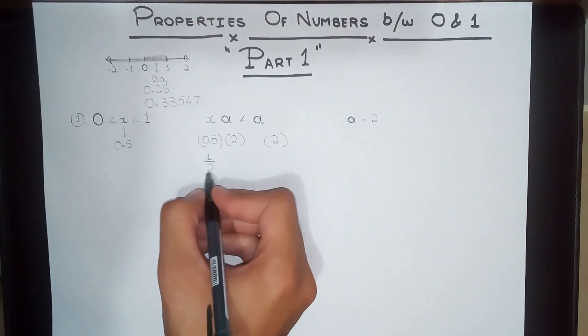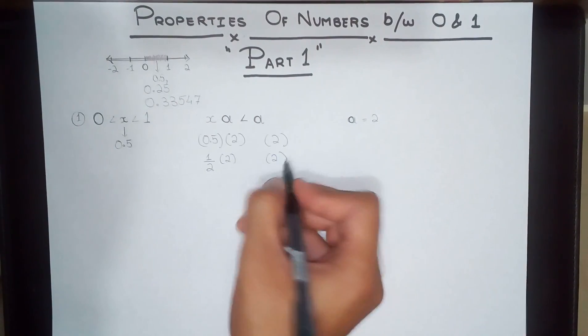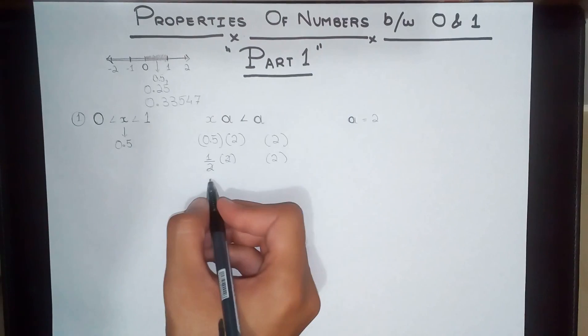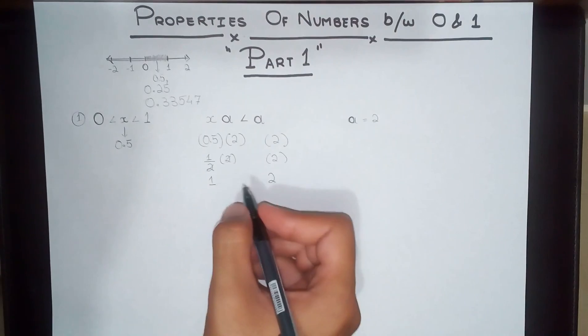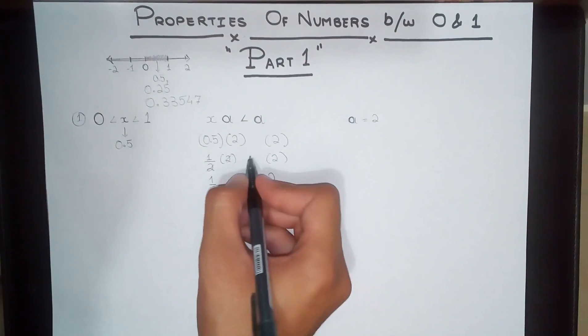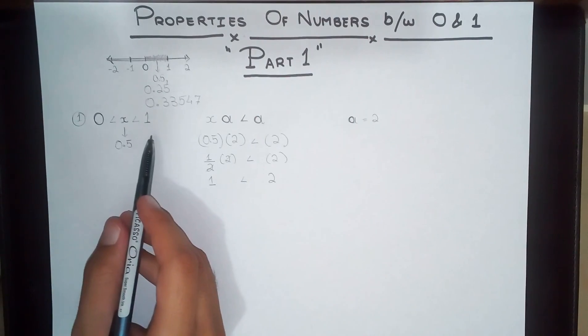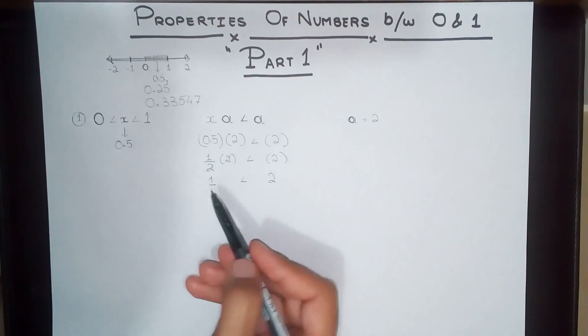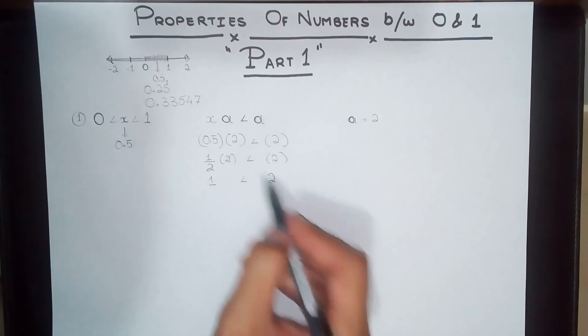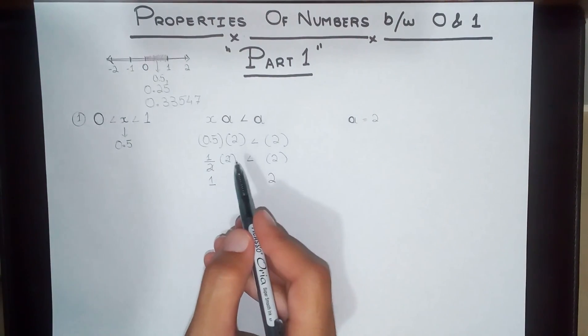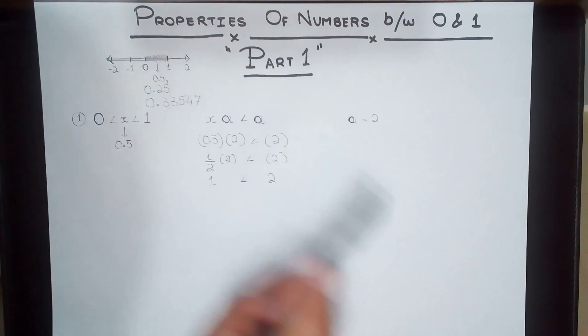Now 0.5 can also be written as 1 over 2 in the fraction form. Let's see, 2 by 2 is cancelled so we are left with 1, and over here we have 2. So this actually is true. If you multiply any number between 0 and 1 with another positive number, what you get is that this whole side is going to be less than the actual number itself. Now this is one of the properties exhibited by these special numbers between 0 and 1.